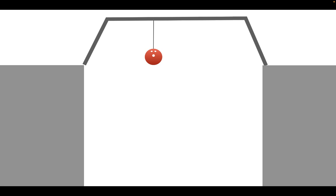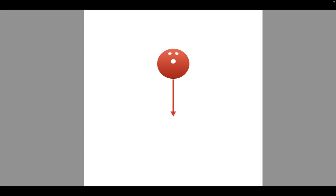In order to understand what freefall is, let's do a little example. Let's say we have a bowling ball that is suspended in the air at a certain height above the ground. If we were to snip the rope holding the bowling ball up, the bowling ball would start moving towards the earth. As it moves toward the surface, the force of gravity causes it to accelerate downwards. This acceleration is called lowercase g, or little g.